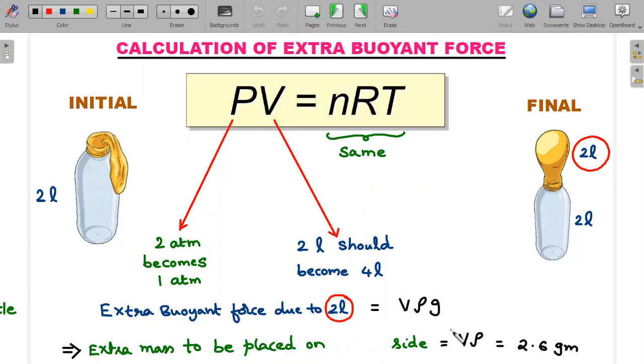Therefore, extra mass that you have to place is nothing but the mass of the air displaced. I removed g here; g is not required in the calculation because it's the mass that is asked. So it is V into ρ. Volume of the air is 2 liters, density of the air is 1.3 kg/m³. Convert this into appropriate units and you end up getting 2.6 grams.